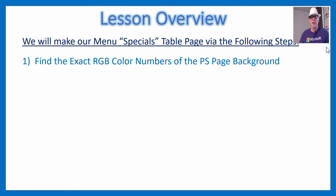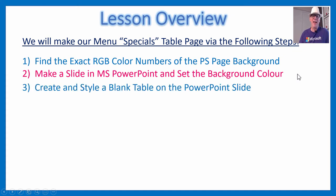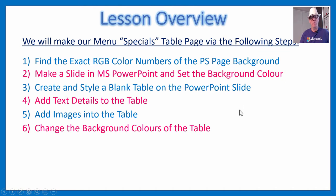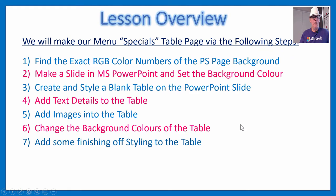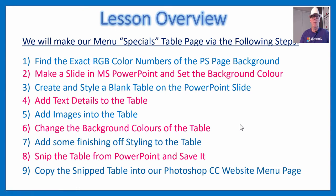First, we have to find the exact RGB color number of our Photoshop page design background — the mustard-type brown color. Then we'll make a slide in Microsoft PowerPoint and set the background to that exact same color. Then we'll create and style a blank table, add text details, add images of the Indian dishes, change the background colors of the table rows, add finishing styling, then snip the table from PowerPoint, save it, and copy-paste it onto our Photoshop menu page.